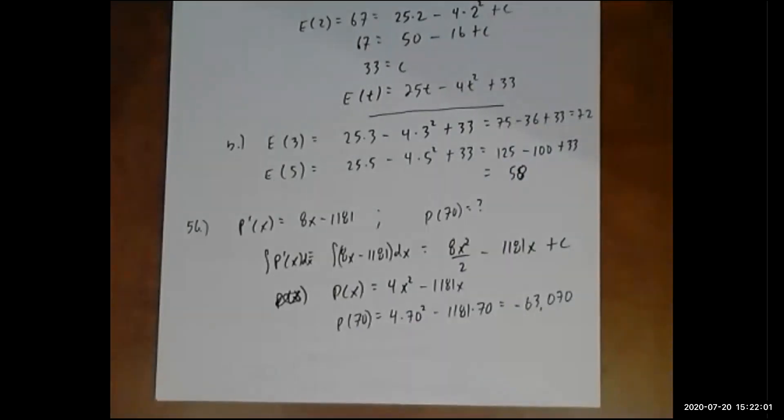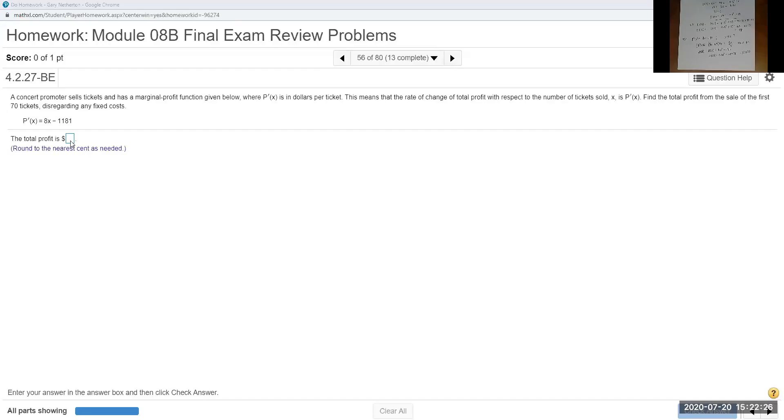I'm going to make sure this problem's done correctly. The derivative is 8x squared over 2 minus 1181x. Assume C is 0, plug in 70. Well, I don't see a mistake. Let's enter it. That says you're losing lots of money. Maybe that's correct because they got to sell a lot more tickets to make money. Negative 63,070.